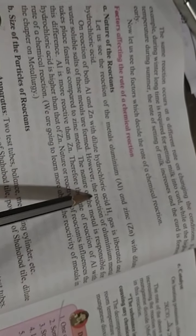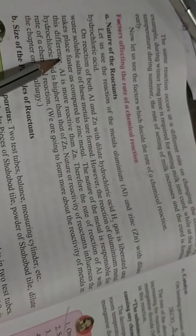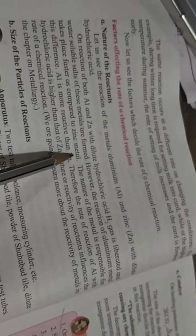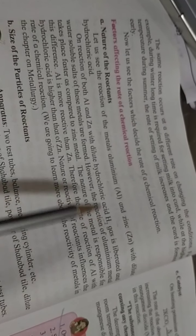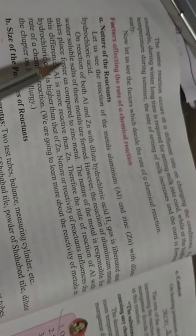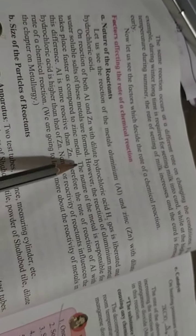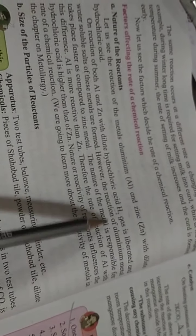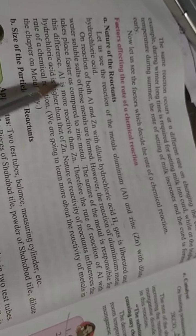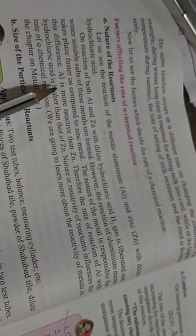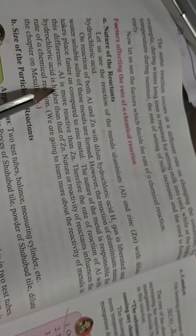However, the reaction of aluminium metal takes place faster as compared to the zinc metal. Aluminium metal reacts faster than zinc. The nature of a metal is responsible for this difference. Aluminium is more reactive.